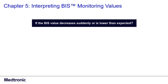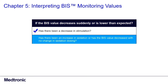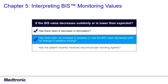What if the BIS value decreases suddenly or is lower than expected? When this happens, there may be clinical questions you can ask to assess the need to decrease sedative agents. For example: Has there been a decrease in stimulation? Has there been an increase in sedation, or has the BIS value decreased with no change in sedation dosing? Has the patient recently received neuromuscular blocking agents?